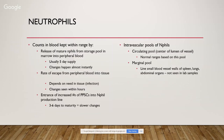Neutrophil counts in the blood are kept within a certain range in a healthy animal. There is a five-day supply of mature neutrophils stored in the marrow, with changes happening almost instantly upon demand. The rate of escape from peripheral blood into tissue depends on the need in the tissue, and changes can be seen within hours. If there's a greater need, stem cells enter the neutrophil production line, taking three to six days to mature. There is a circulating pool in the center lumen of the vessel on which normal ranges are based, and a marginal pool lining the small blood vessel walls of the spleen, lungs, and abdominal organs — those numbers we don't see in lab samples.